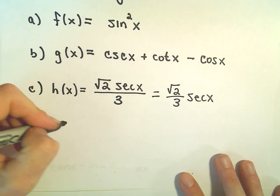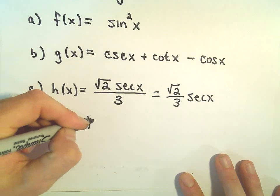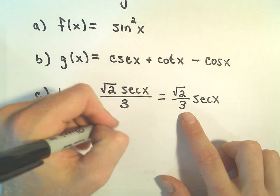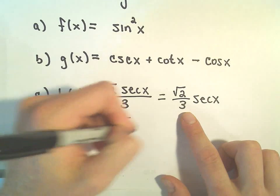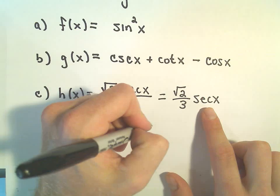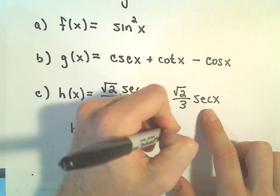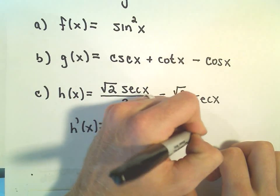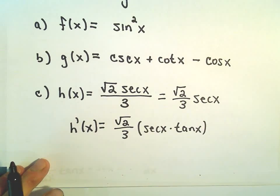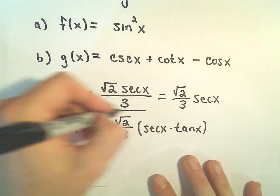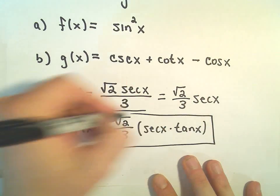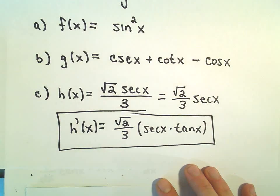Well, if we take the derivative of this, the square root of 2 over 3, we just leave that alone. And then we just multiply by the derivative of secant x, which is just secant x tangent x. And there's not really a lot to simplify at this point, so I would just leave it alone. Now we've got our derivative.